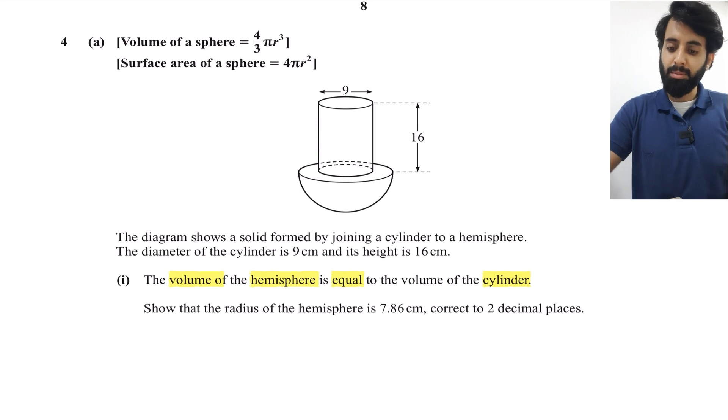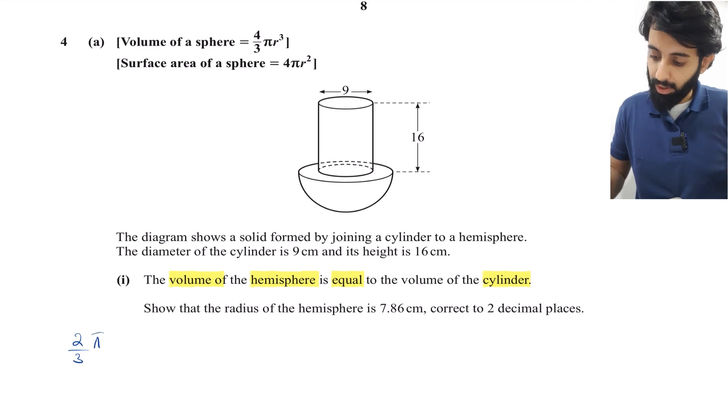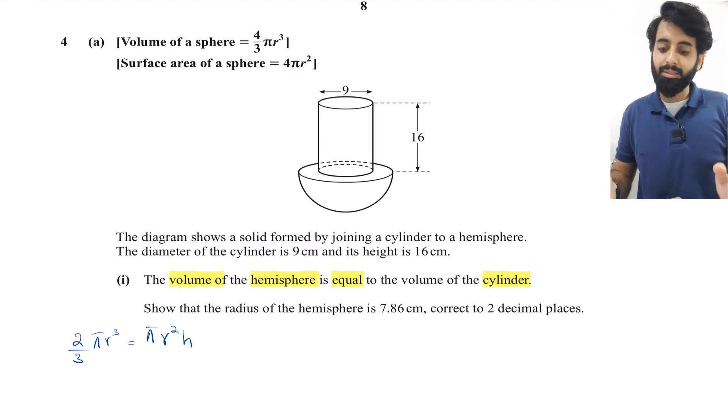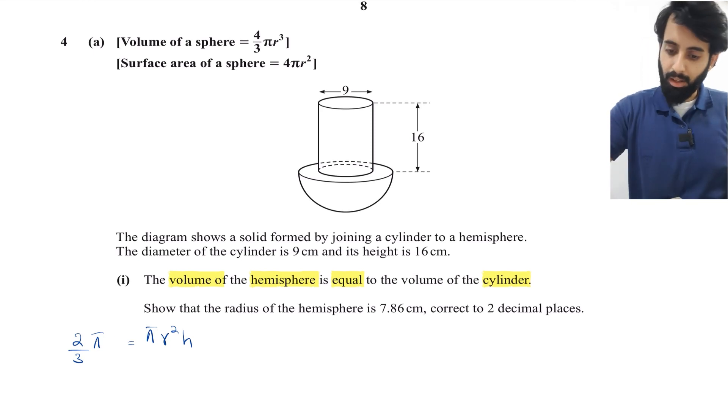The volume of the hemisphere is (2/3)πr³, since a hemisphere is half of a sphere. This equals the volume of the cylinder, which is πr²h. Be careful here - they don't have the same radii. Instead of writing it as lowercase r, I'm going to write it as capital R because the radius of the hemisphere is larger than the radius of the cylinder.